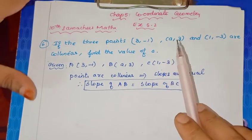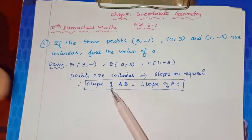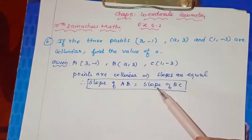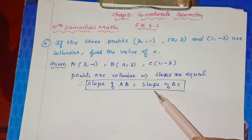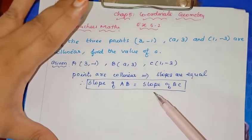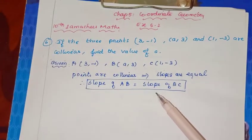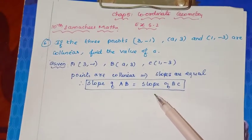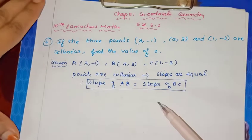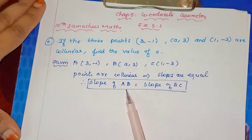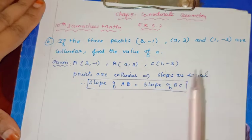We know that when 3 points are collinear, we use the slope concept. If we use the triangle concept, the area of triangle is 0. Exercise 5.2 is about slope — slopes are equal. I explained this in the previous sum also, the 5th sum. Remember: if points are collinear, slopes are equal.